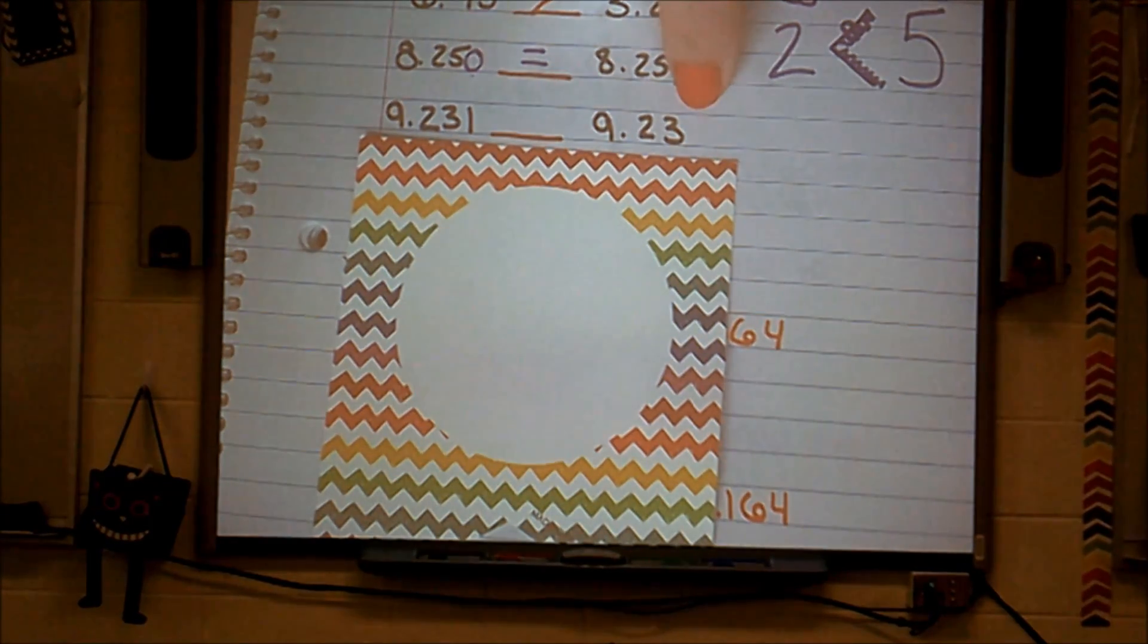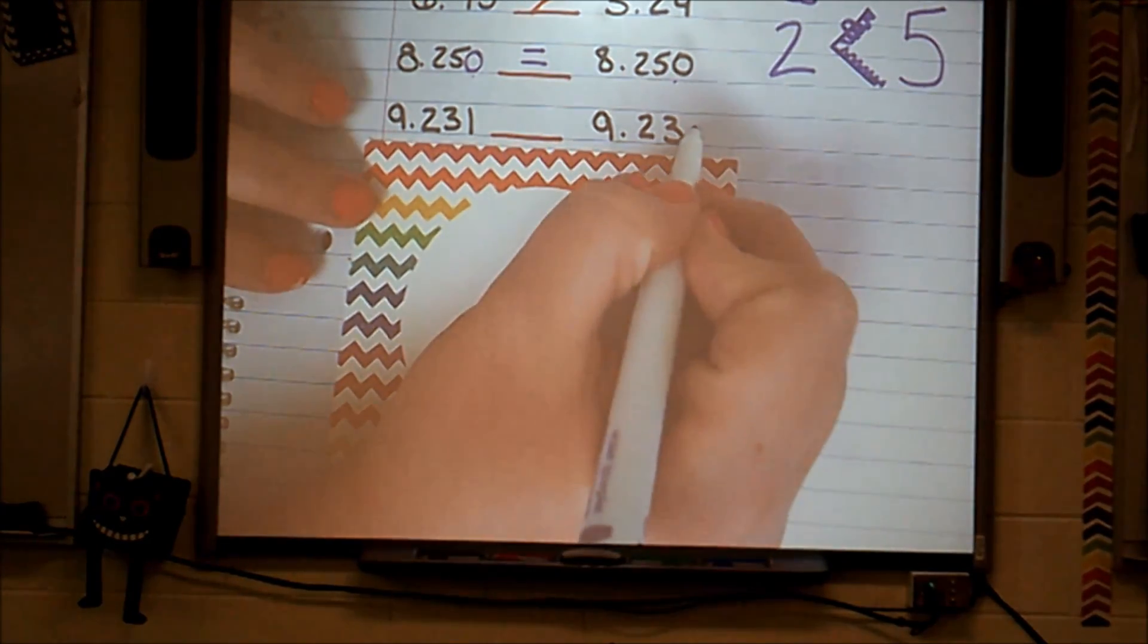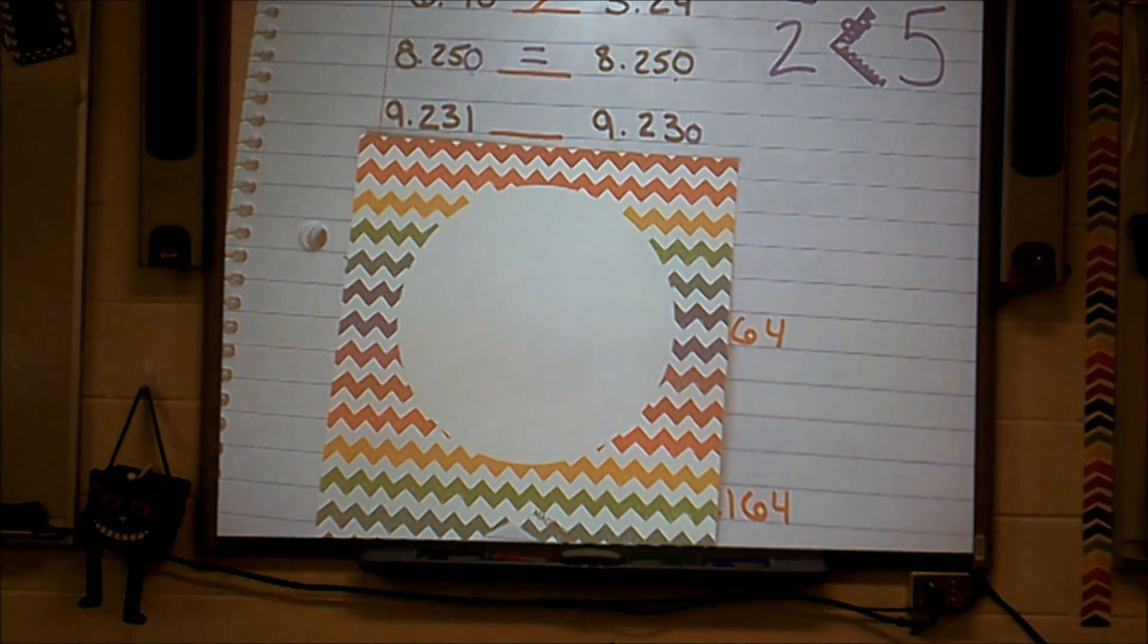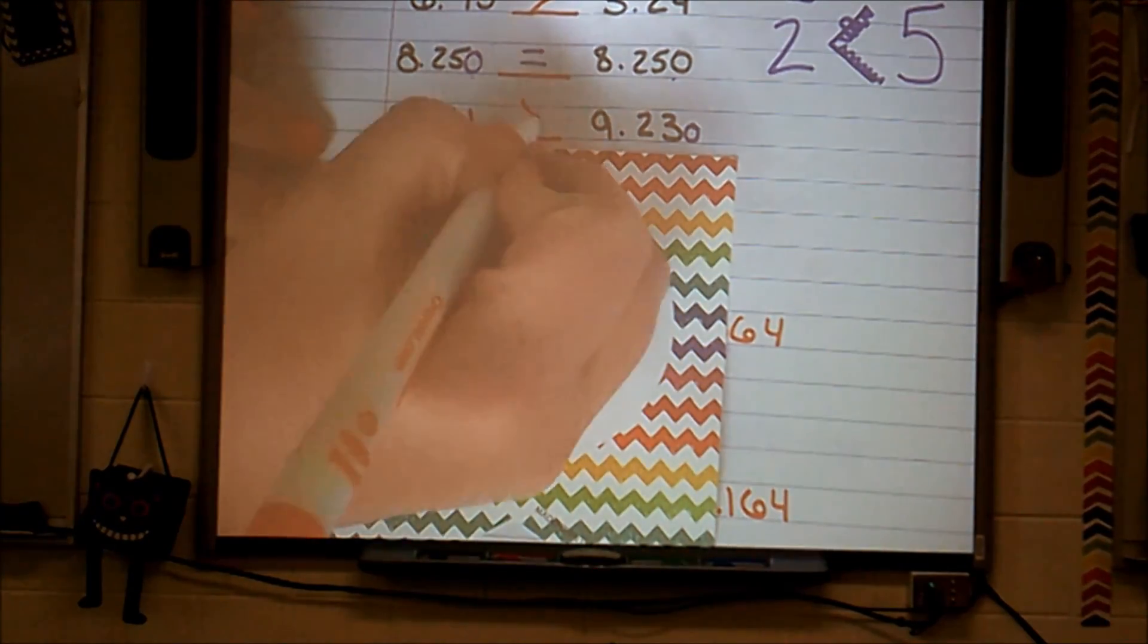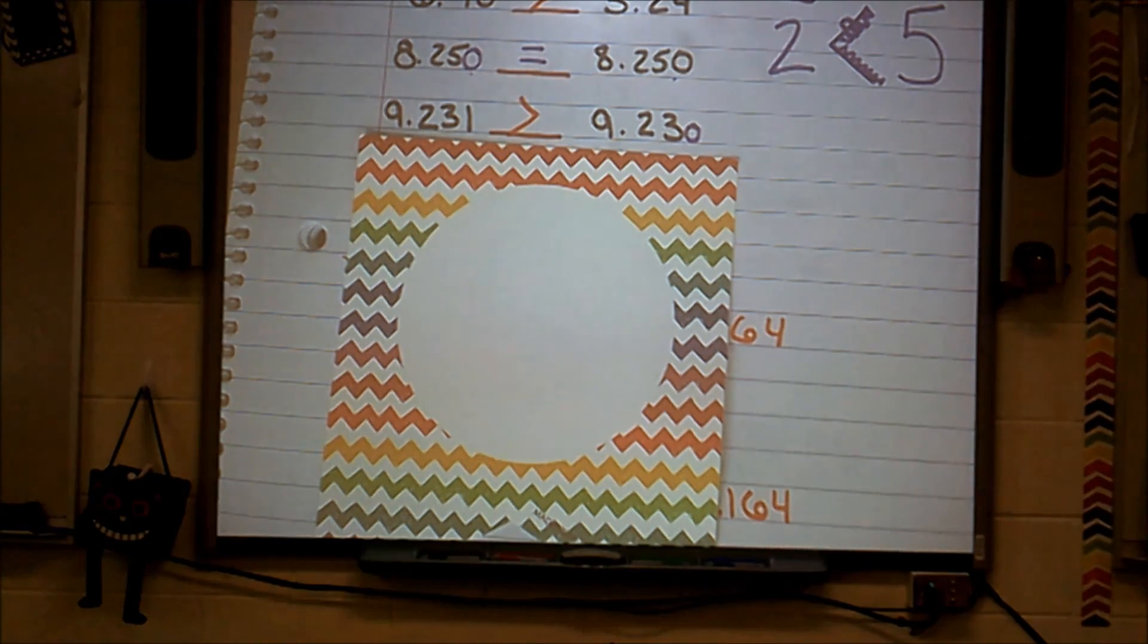Keeping that same idea from the previous problem, I know I can add a zero there. And it does not change the place value. That being said, what is greater? 1 thousandth or 0 thousandths? Believe it or not, this number, 9 and 231 thousandths is slightly larger than the other.